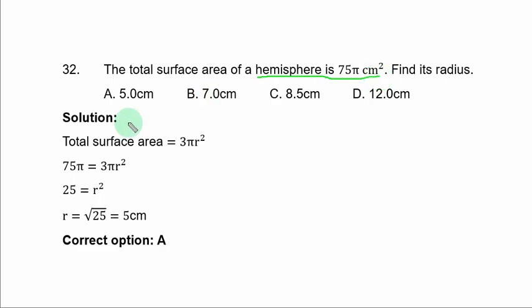Solution. Total surface area of a hemisphere is given by 3πr². That area in the question is 75π which is equated to 3πr². You can divide by 3π and you have 25 equal to r². To get r, take the square root of both sides and r is equal to square root of 25 and that is 5 centimeters.